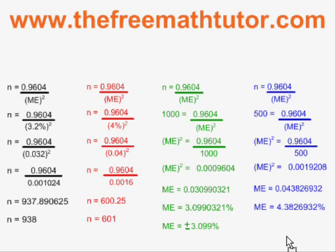We have 4.3826, etc. percent, and we're going to round it off to the nearest hundredth this time. We have a margin of error of plus or minus 4.38 percent.